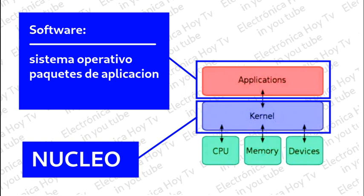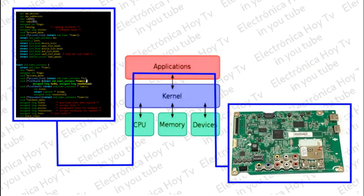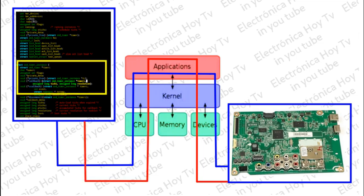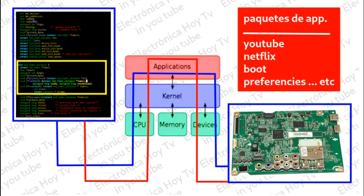El sistema operativo funciona así: con las diferentes instrucciones recibidas en lenguaje de Linux, aplica todas las señales digitales o análogas al hardware y recibe de este igualmente todas las señales binarias o voltajes y señales análogos de la placa. Pero el sistema operativo no puede funcionar solo, pues este espera las órdenes que se le dan mediante las instrucciones en Linux generadas por los paquetes de aplicación. Estos paquetes son programas diseñados para realizar funciones específicas sobre el sistema operativo, los cuales incluyen, por supuesto, a Netflix o YouTube.